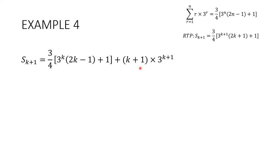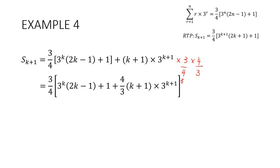Now prove it true for n equals k plus 1. The required to prove statement: sum of k plus 1 terms equals three-quarters times 3 to the k plus 1 times 2k plus 1 plus 1. The sum of k plus 1 terms equals sum of k terms (our assumption) plus the k plus first term. I can see three-quarters out the front in the target, but not in the last term, so I multiply that term by three-quarters times four-thirds — since three-quarters times four-thirds equals 1, I haven't changed anything. Now I can factorize three-quarters out front.